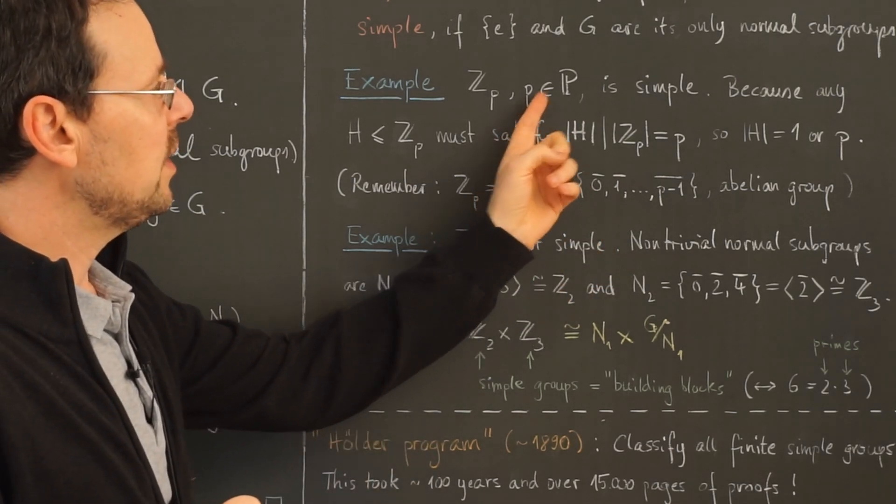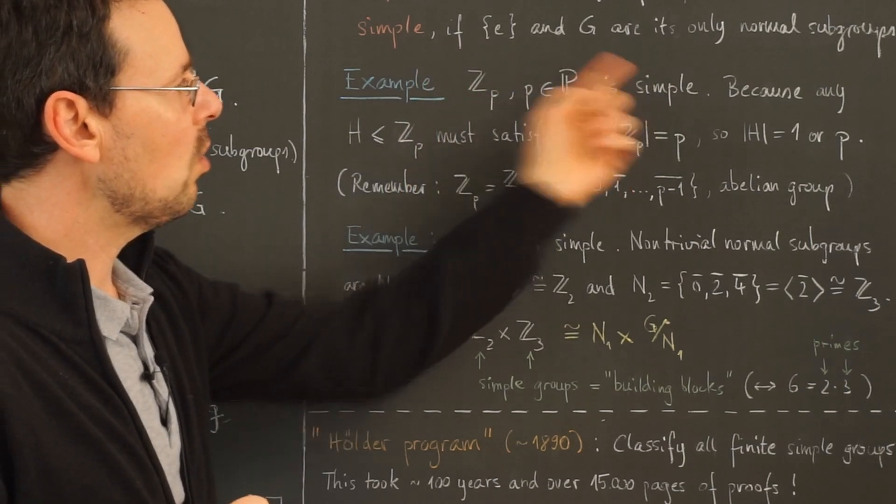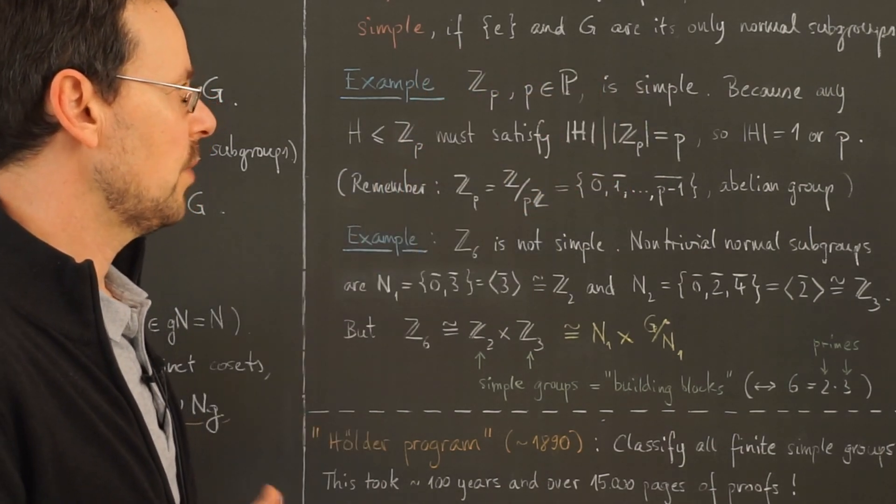And now we assume that p is a prime. Then these groups here are always simple. Why is that?